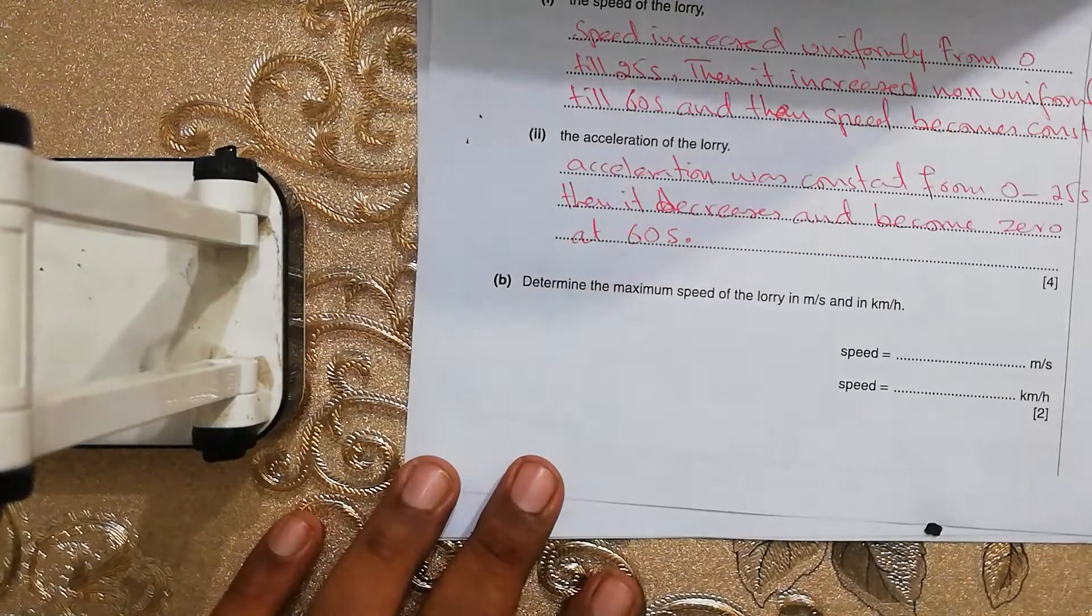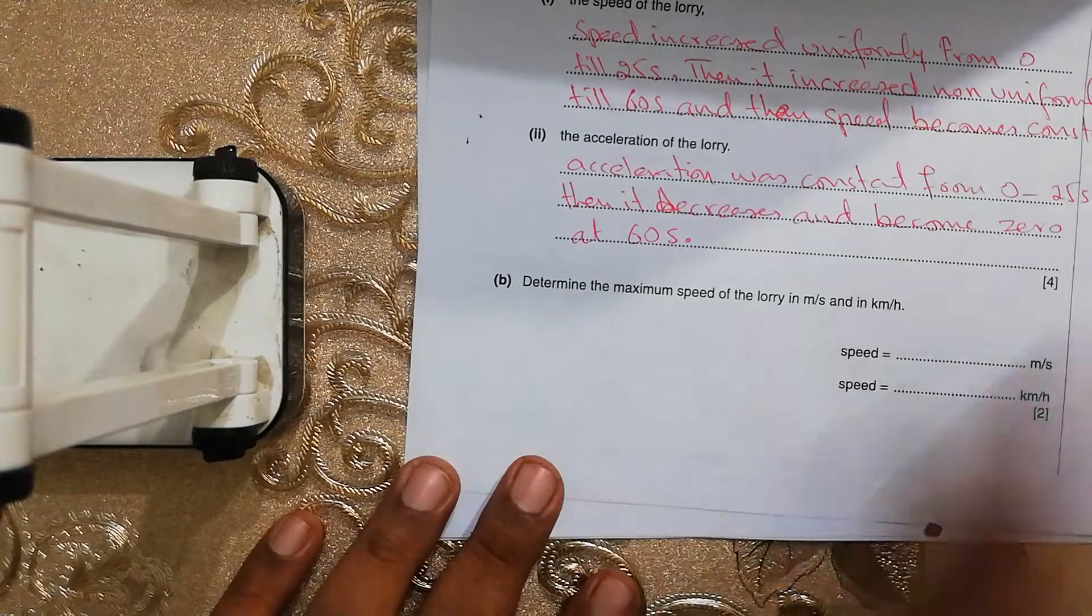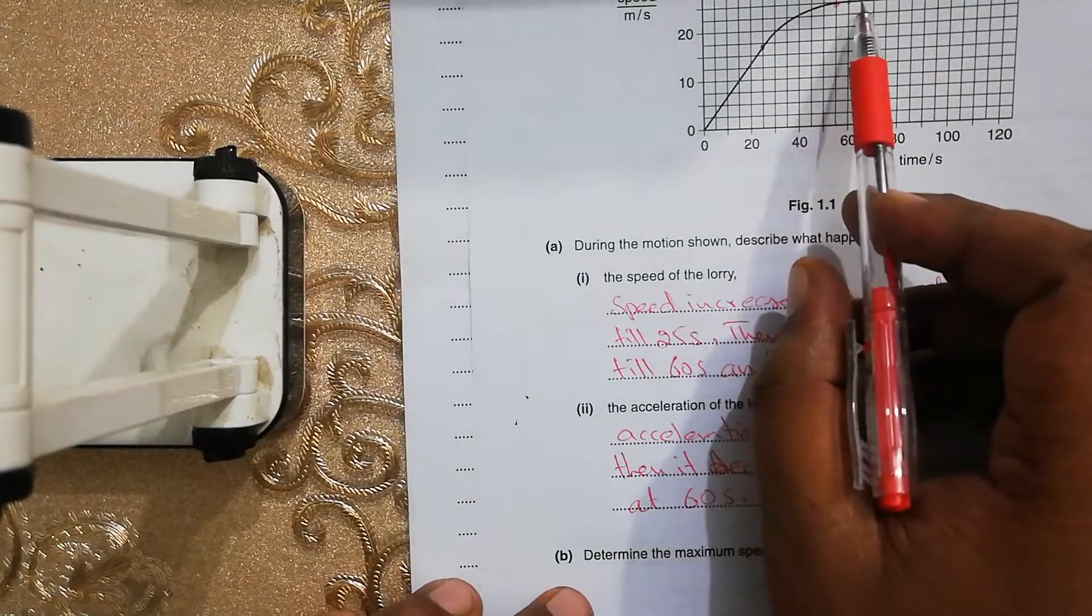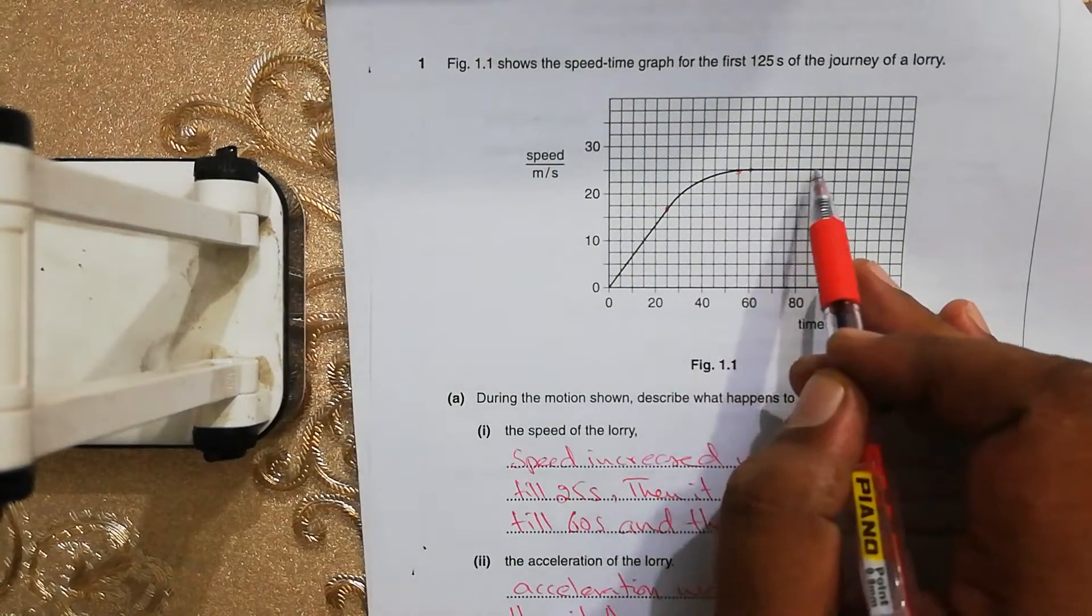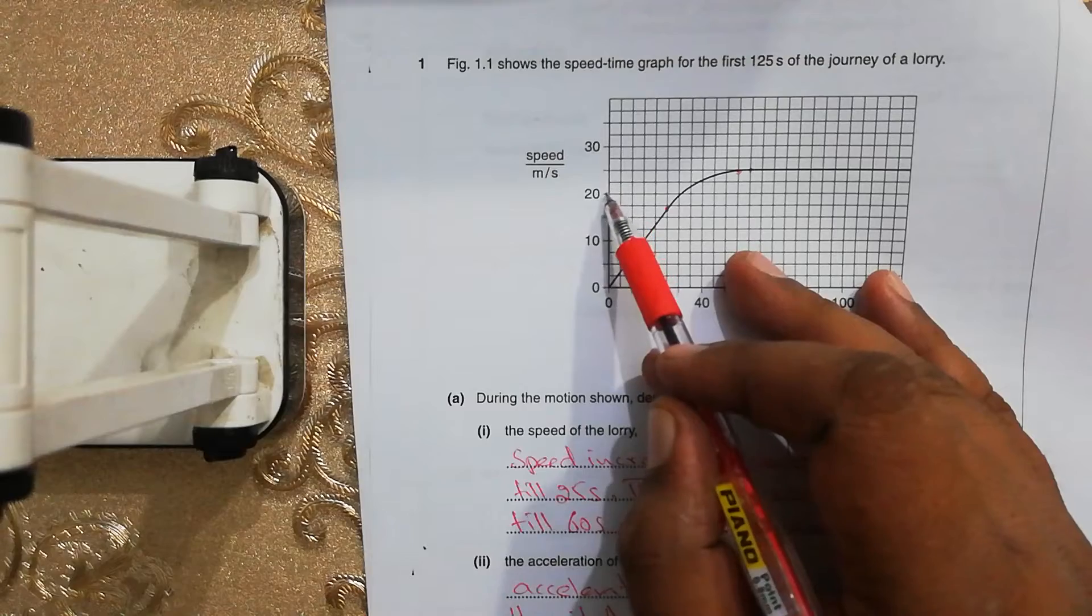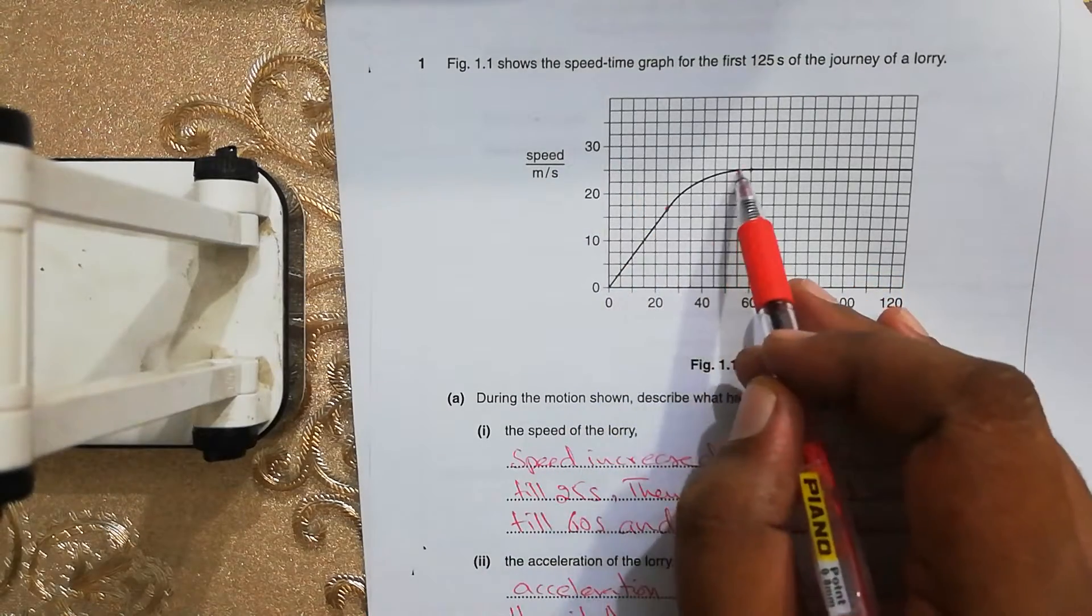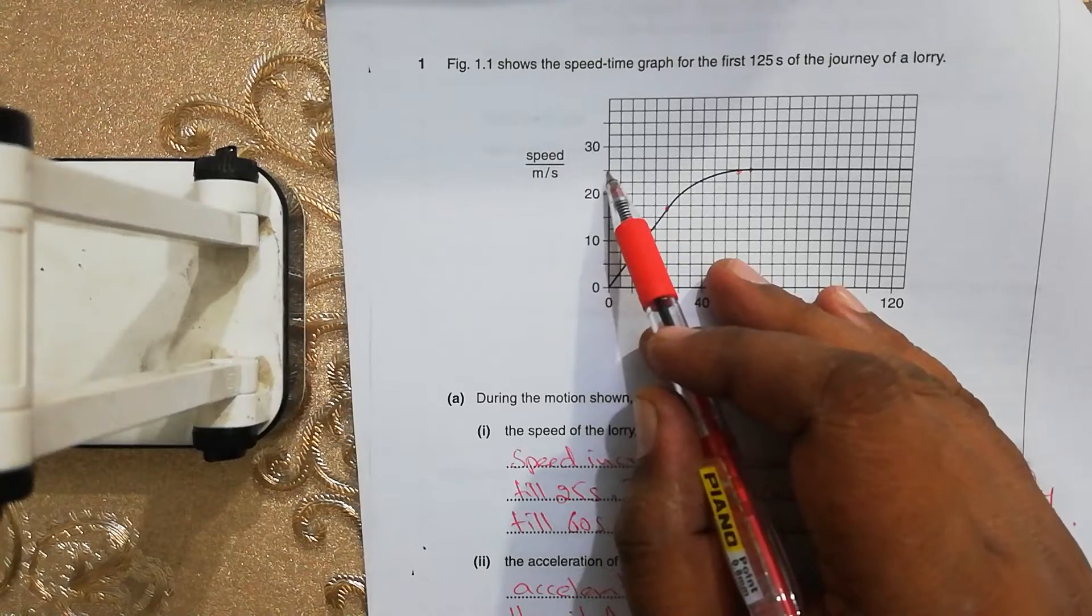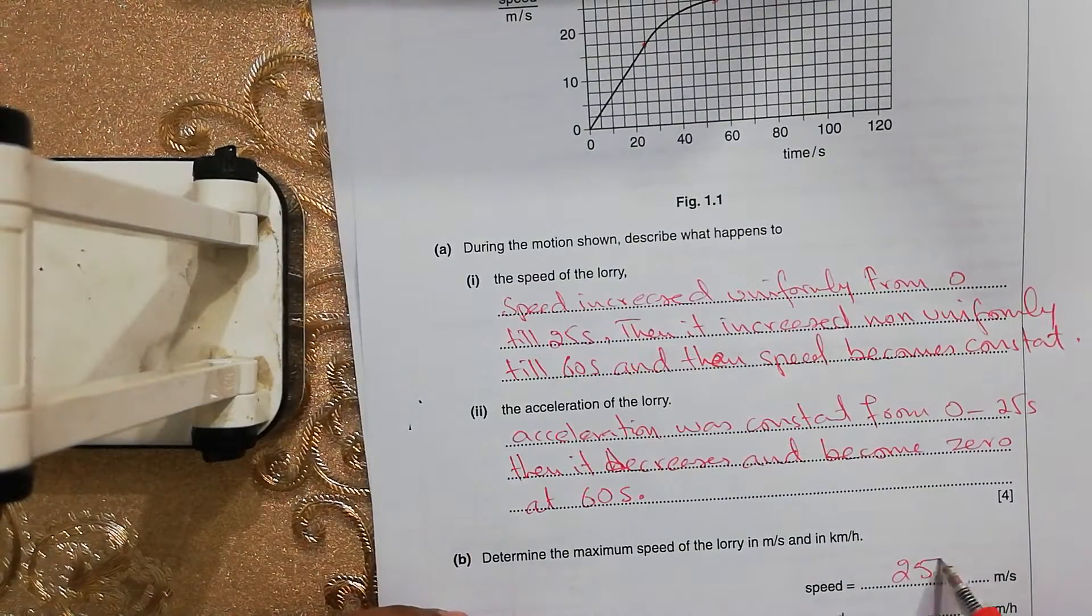Then the next question is determine the maximum speed of the lorry in meter per second and in kilometer per hour. From the graph you can see the maximum speed is this. This is 20, this is 30. So maximum speed is here. This will be probably 25 meter per second. So the speed is 25 meter per second.